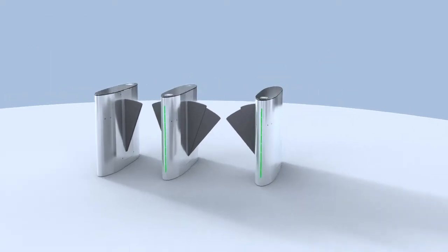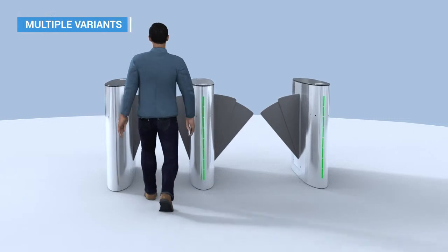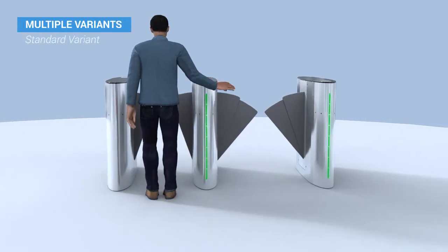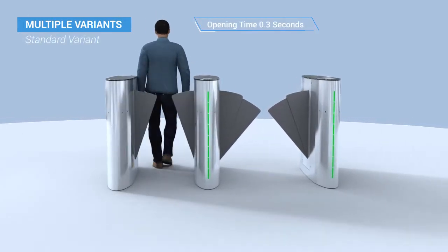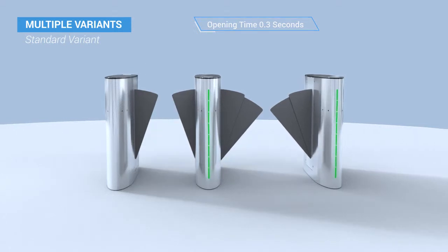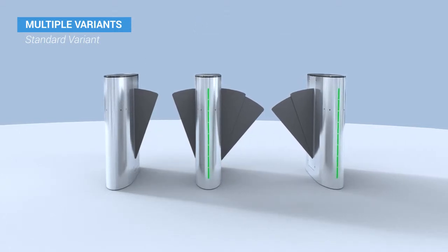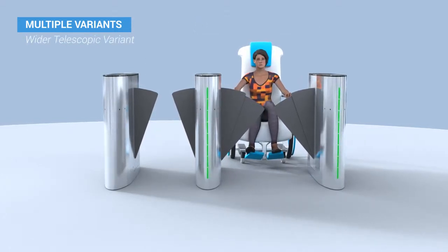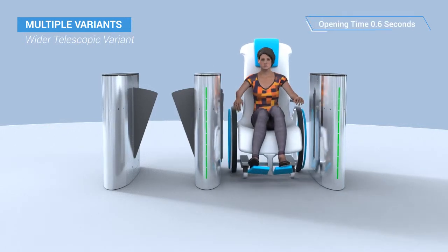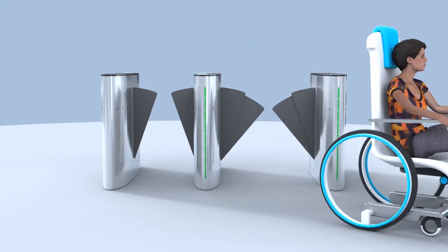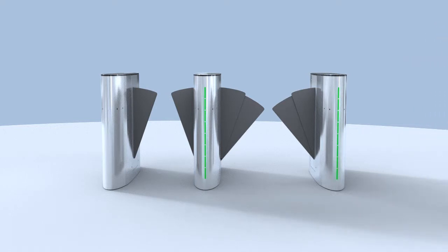The NPR Series from Magnetic comes in two variants. The standard flap variant with shorter opening time of 0.3 seconds ensures quick pass-through, and the wider telescopic flap variant with opening time of 0.6 seconds makes the NPR Series suitable for wheelchairs and prams.